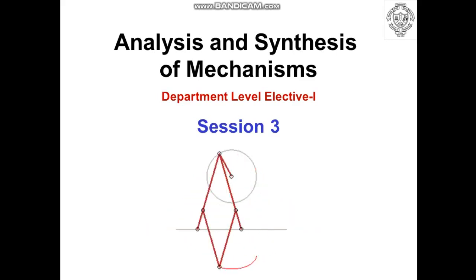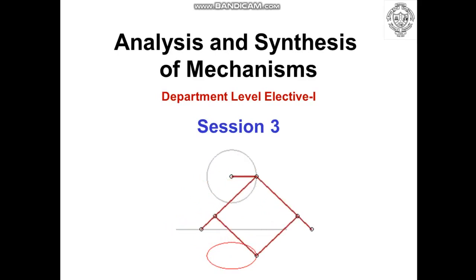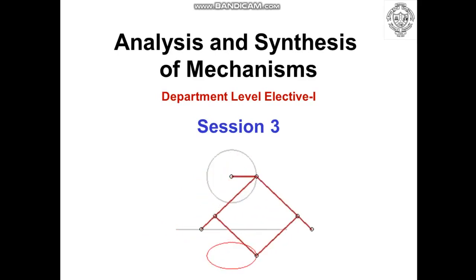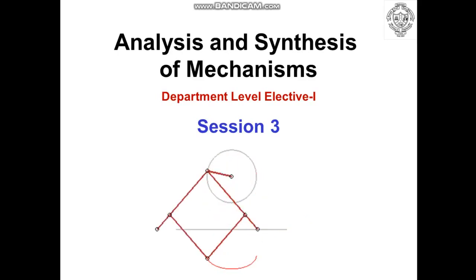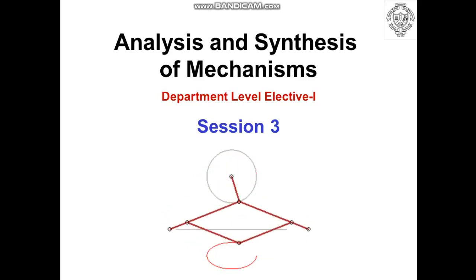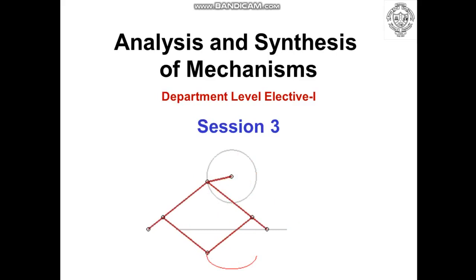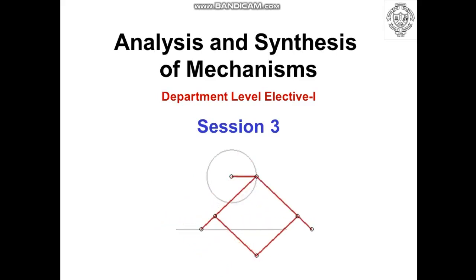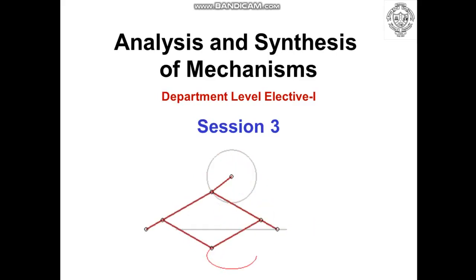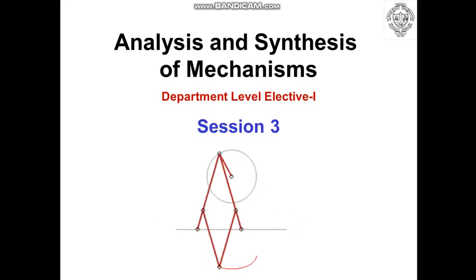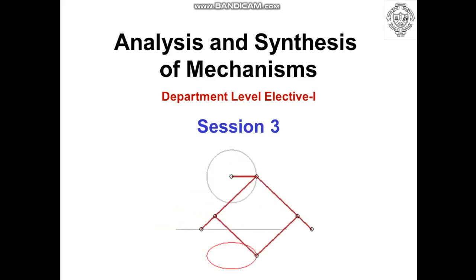To simply put, the first two approaches — path generation and motion generation or body guidance — are used to synthesize motion of a coupler and a point on it. Whereas the third approach, function generation, is used to synthesize the motion of output crank with respect to motion of input crank.